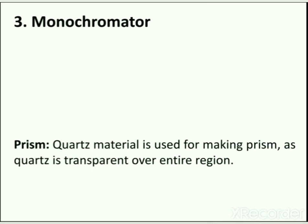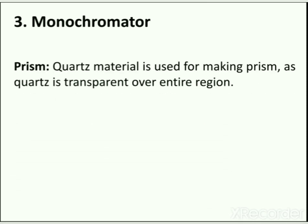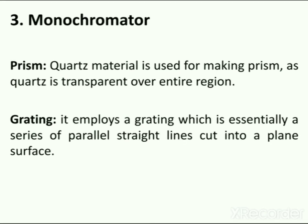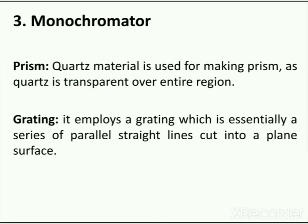The monochromator is composed of three components: entrance slit, dispersion element, and exit slit. In the flame photometer, two types of dispersion elements are used: prism and grating. The prism is made of quartz and silica while the grating is made of aluminium. Grating is preferred over prism when higher dispersion is required.